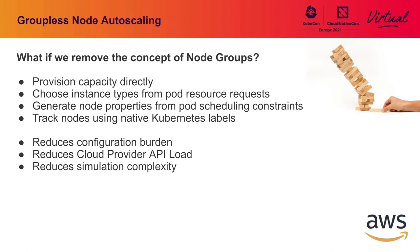The API load is also significantly reduced. With every ASG, you have to ask the cloud provider for the current status of each one, and those API requests stack up. You can run into API limits and the whole system grinds to a halt. Instead, we just make calls when creating and deleting capacity. Otherwise, we rely on the Kubernetes API server, which can support much higher throughput. This also reduces simulation complexity — we can collapse the simulation space to just instance types, because we can prescribe the availability zone and scheduling properties, which really simplifies things.